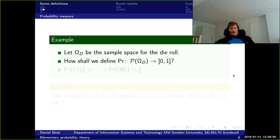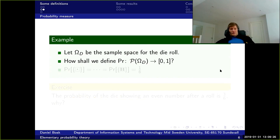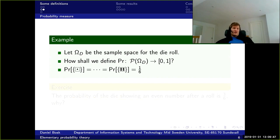Let our probability space be the die roll, as before. How should we define this probability function? Well, we're used to dice being perfect, which means there should be equal probability for each side to come out facing up. So the probability of the event containing only one outcome should be the same for all outcomes — and since we have six sides, it should be one sixth for each side.